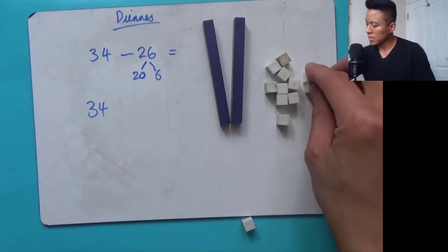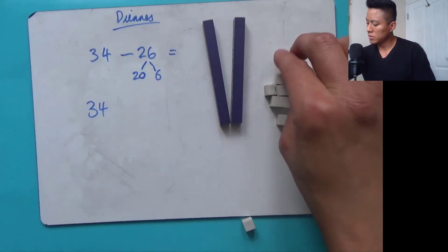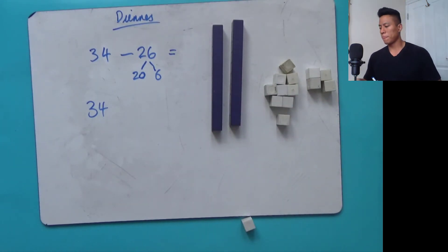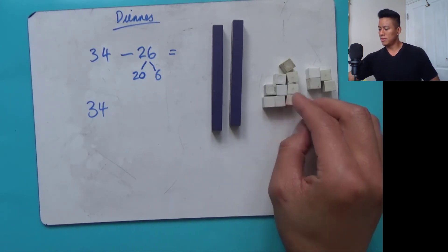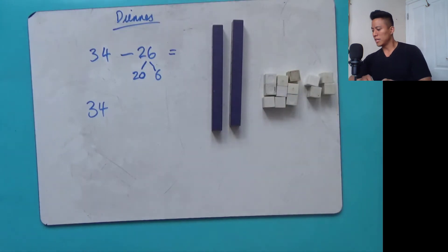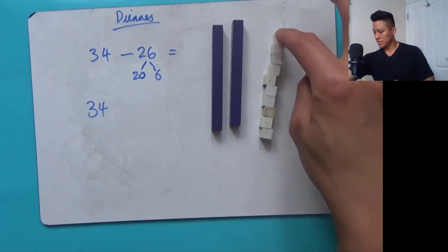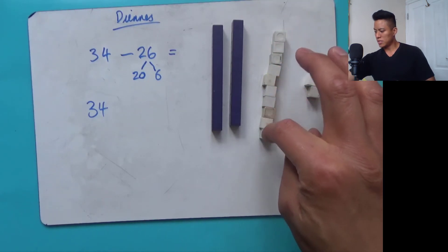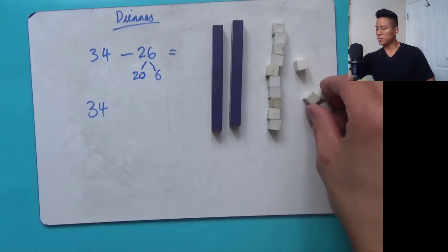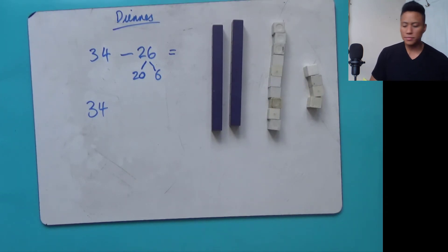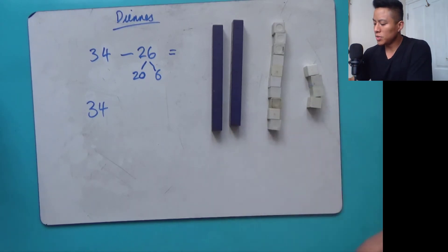So we've got the ten ones and the four we had originally — now we've got 14. Let me make sure: one, two, three, four, five, six, seven, eight, nine, ten, and then our four from earlier. Now since we've exchanged it, we're going to be able to subtract the six here.